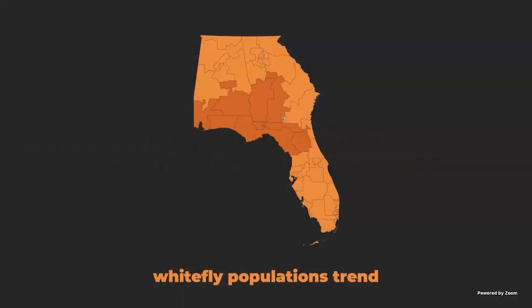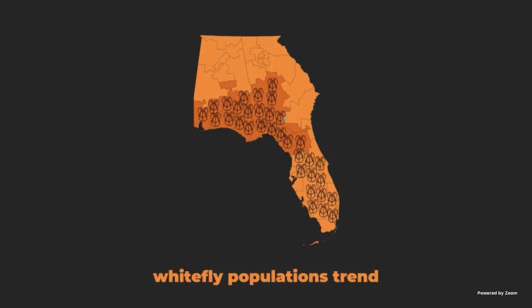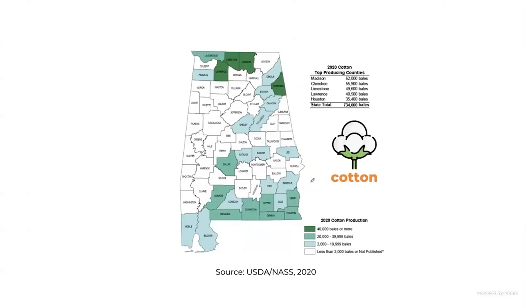Whiteflies migrate northward from South Florida as temperatures warm during summer — from central Florida to north Florida, then into southeast Alabama and southwest Georgia. That's when we have our peak problem. This also occurs because they have host plants throughout the entire season.